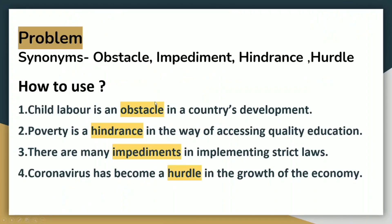The first word is PROBLEM. When you get a problematic essay to write, you have to use this word quite a few times in the complete essay. Try to replace this word with its synonyms. You can use obstacle, impediment, hindrance and hurdle. Child labour is an obstacle in a country's development. Poverty is a hindrance in the way of accessing quality education. There are many impediments in implementing strict laws. Coronavirus has become a hurdle in the growth of the economy. By using these advanced words, you will certainly enhance your band score in IELTS.